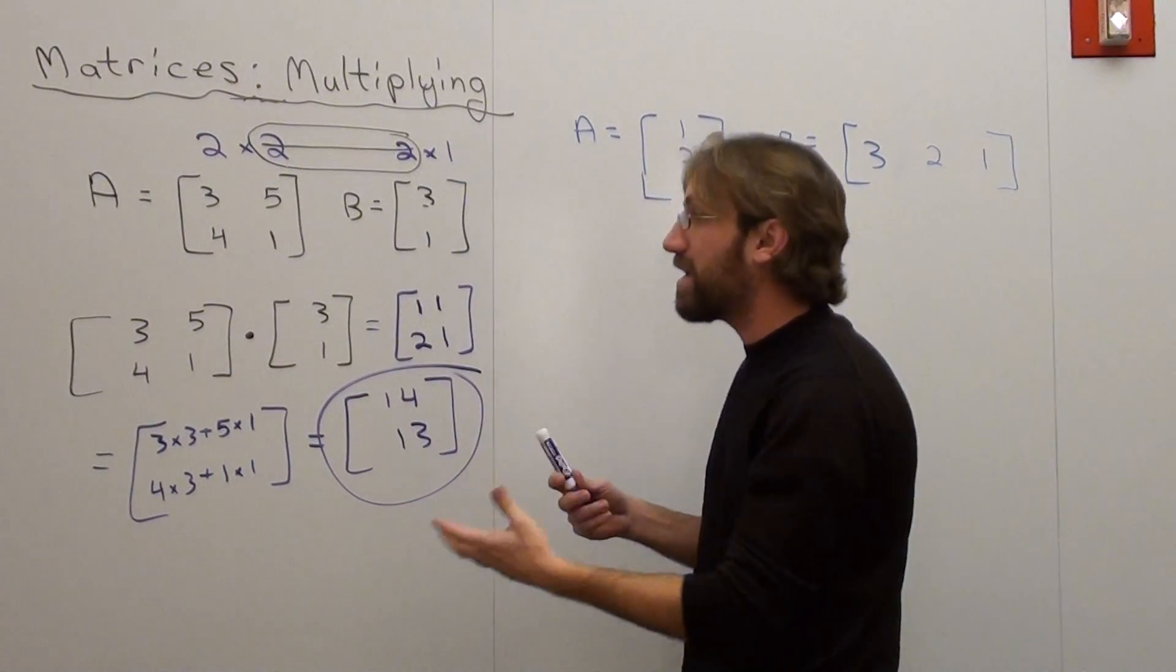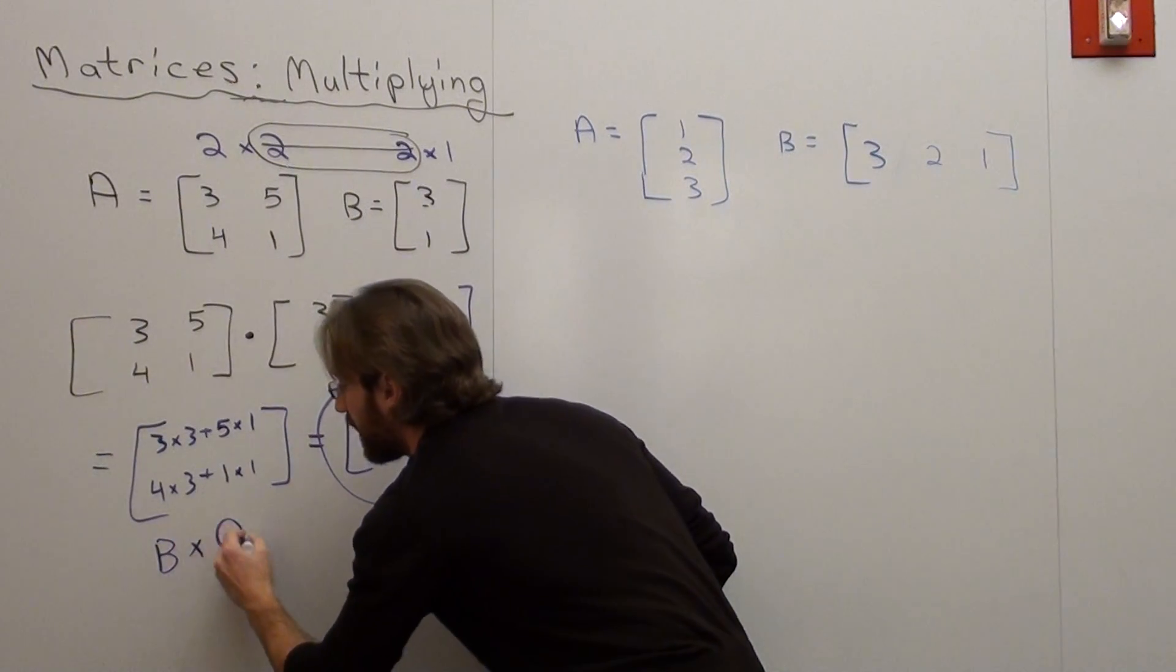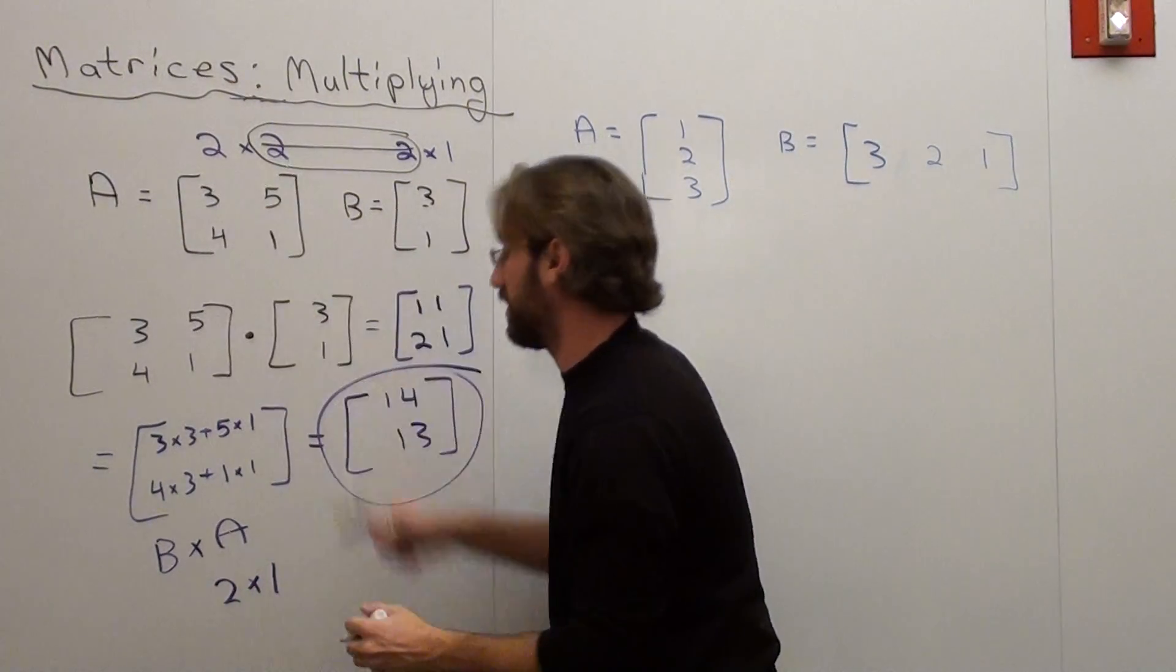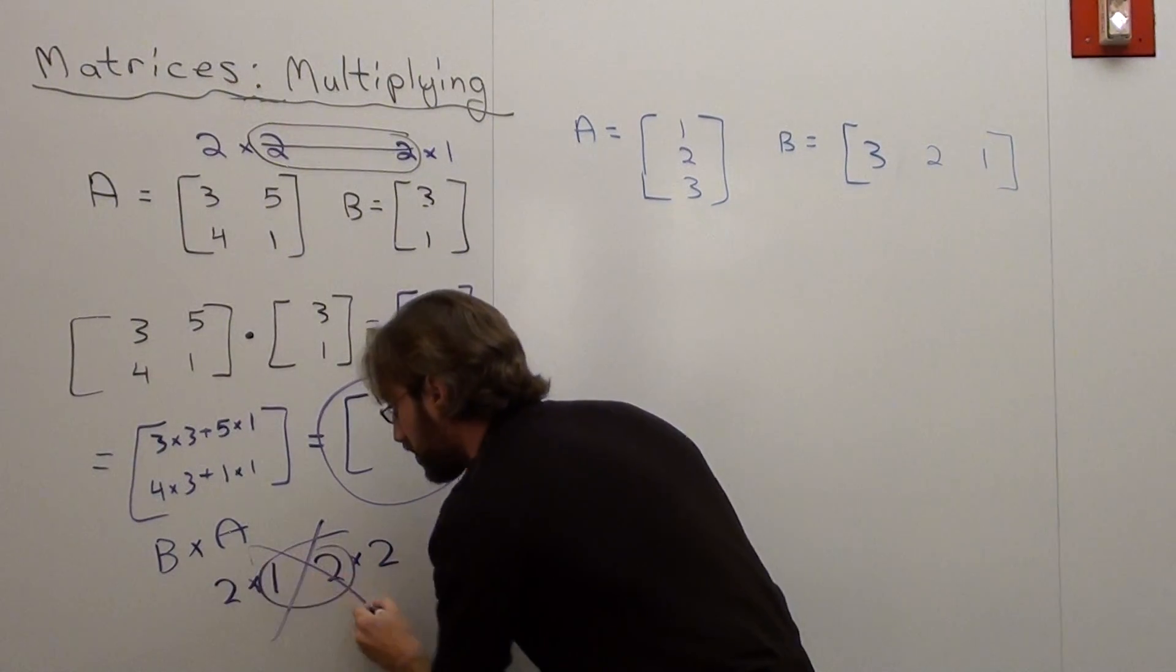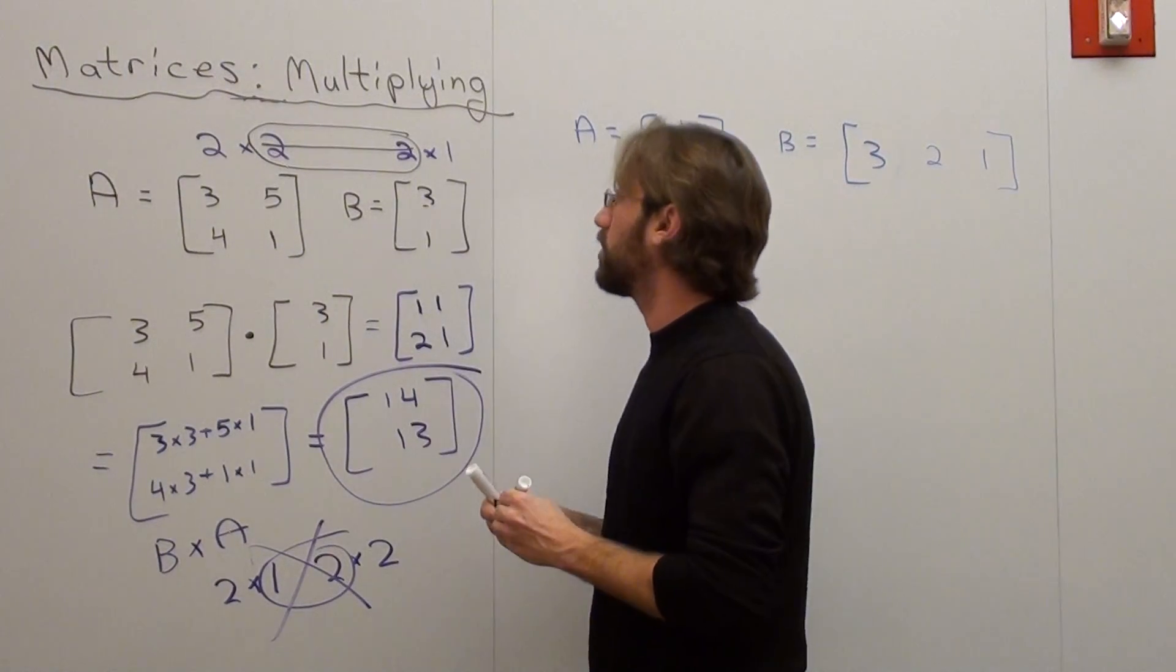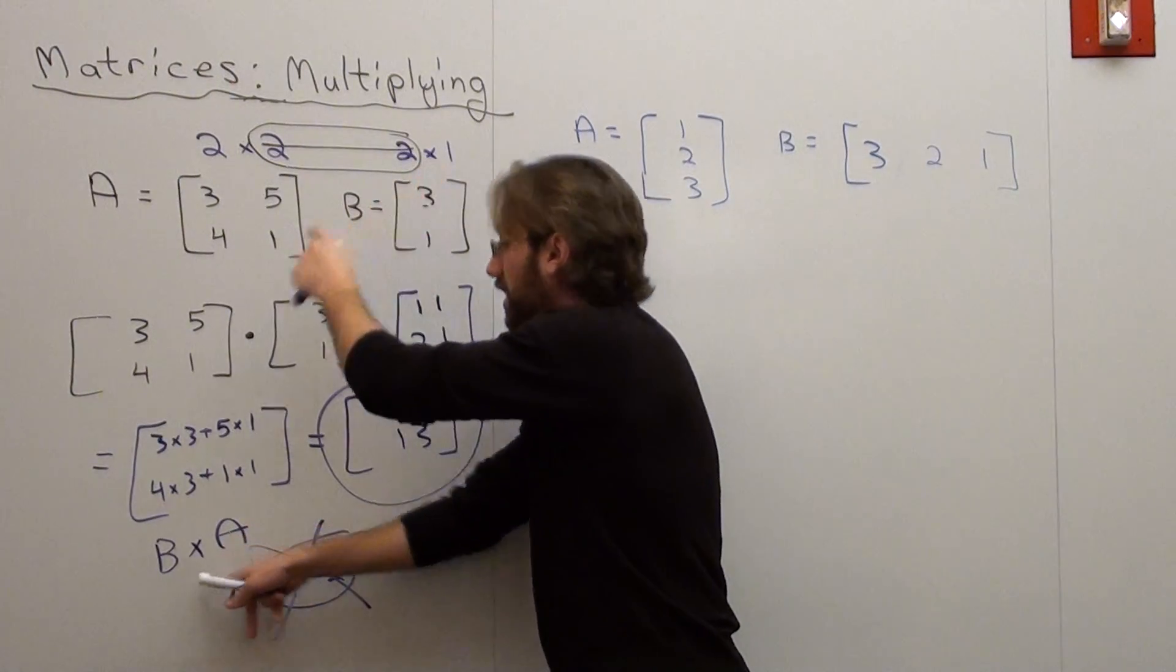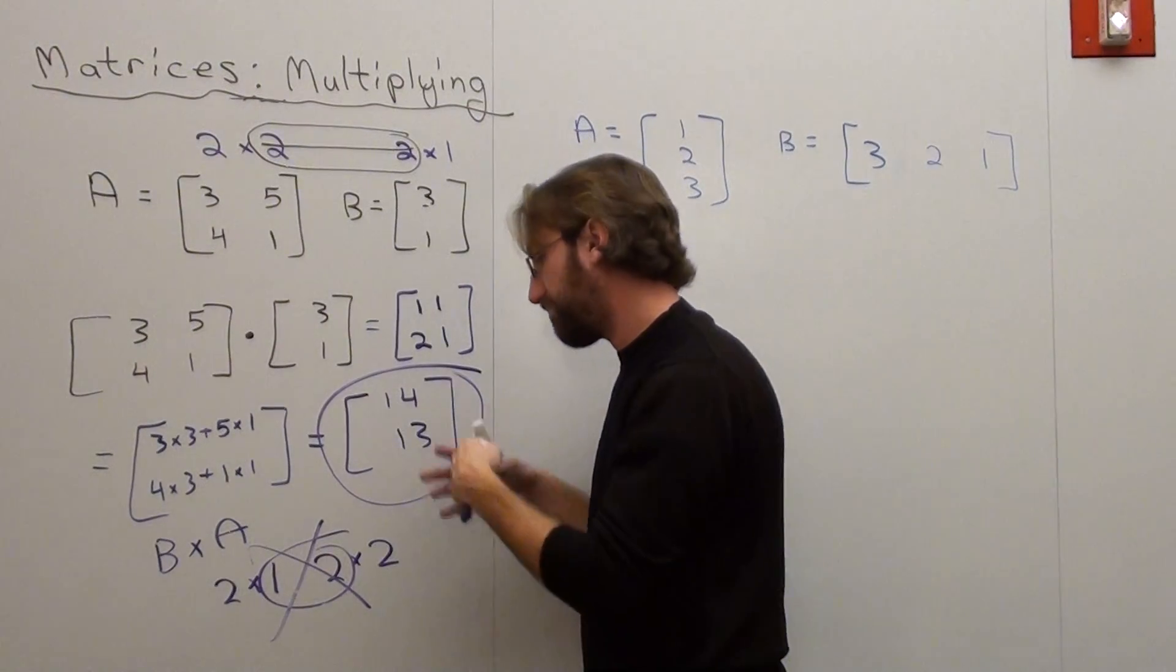Let me ask you if you can do B times A. Can you do B times A? If I reverse the matrices, can I do a 2 by 1 times a 2 by 2? And the answer is, since these don't match, it's garbage. You can't do B times A, it doesn't exist. You can do A times B, but you can't do B times A, because these two numbers have to match. Always check the inside numbers that don't match. That's it.